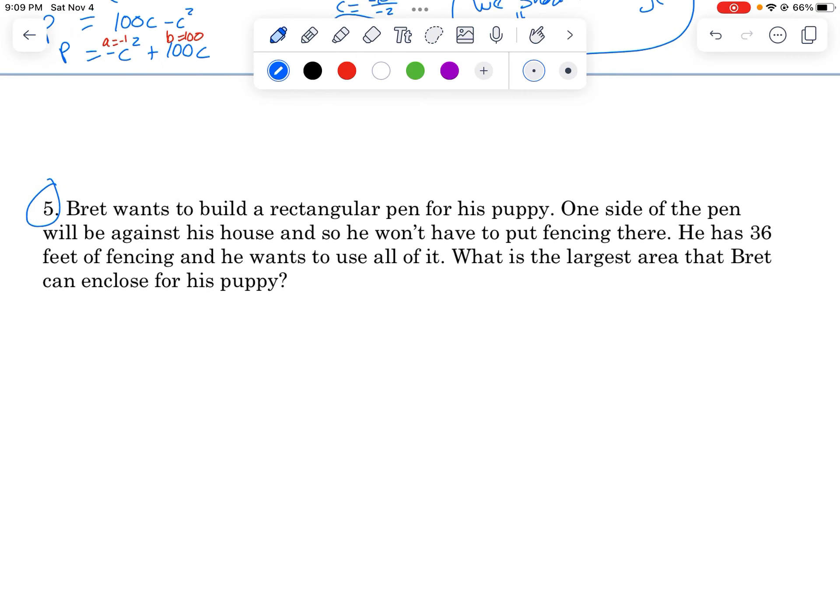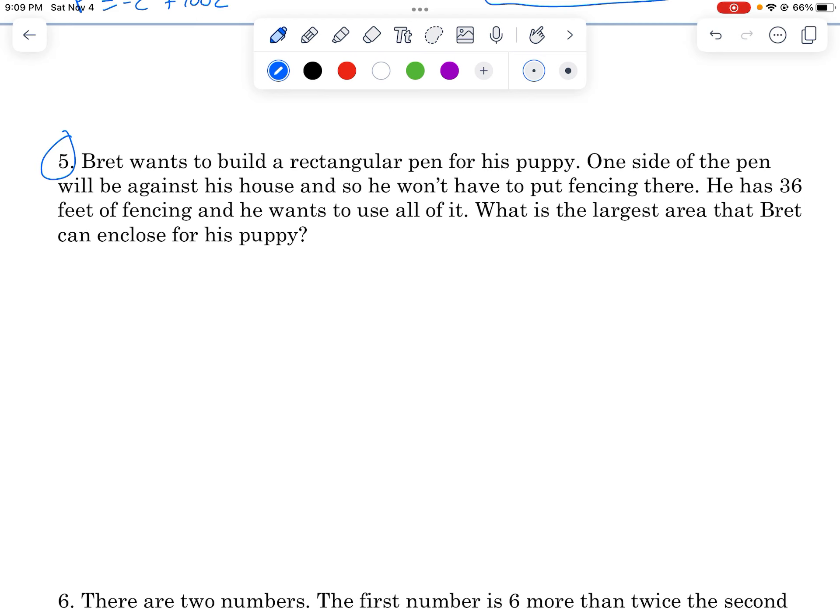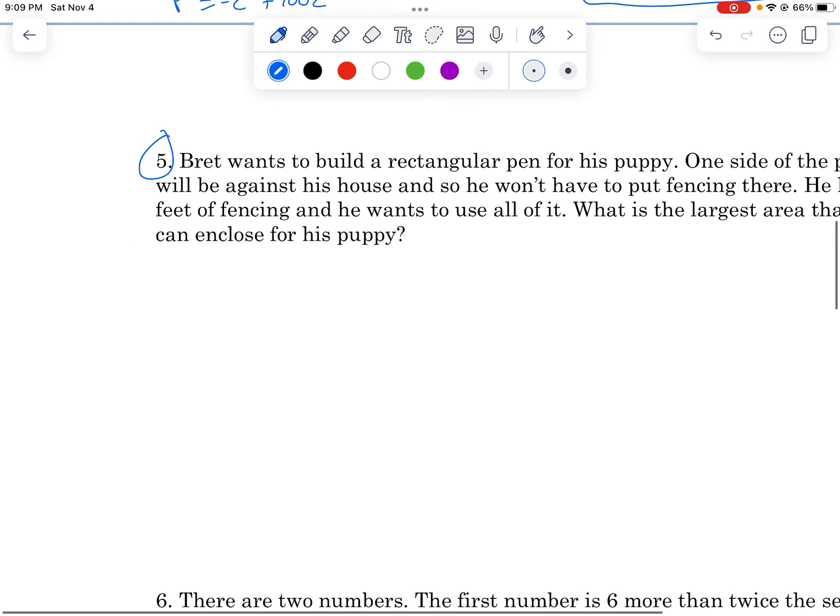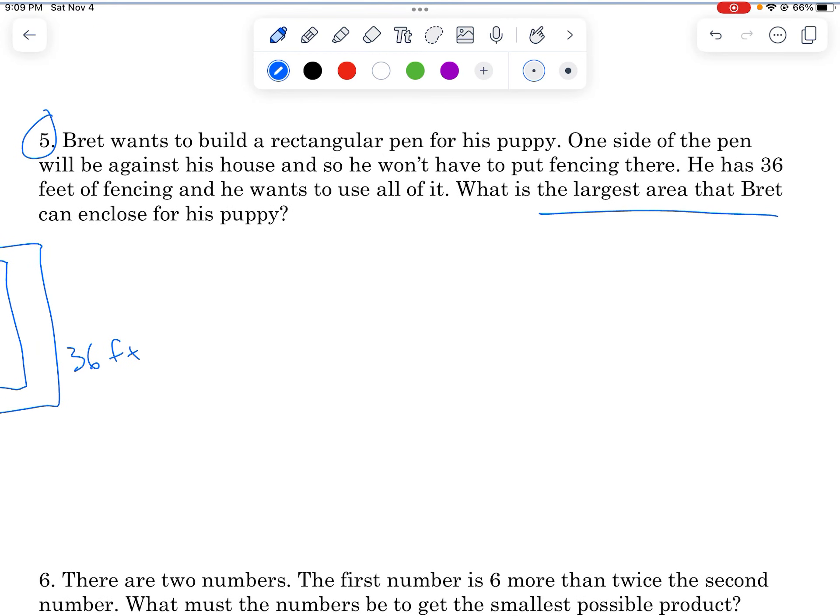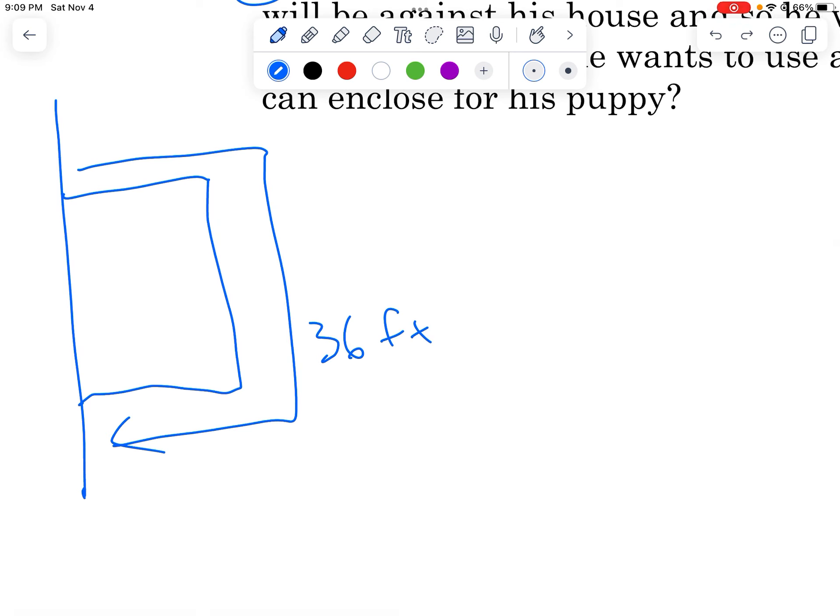We got a couple of mid-range ones here. This is Brett and his rectangular pen for his puppy. And the one side is against a house, so you won't put fencing there. Let's draw a little diagram. We got a house thing, and then we're going to make a little pen here. And it says he has 36 feet of fencing. So it's going to go around here, and that's going to be 36 feet. What is the largest area he can enclose? Well, if you have 36 feet of fencing, there's some constraint there. You can't just make it infinitely big. You only have 36 feet of fencing.